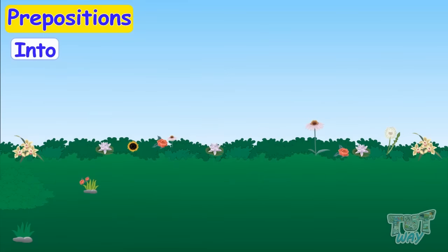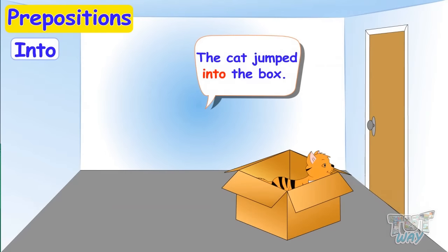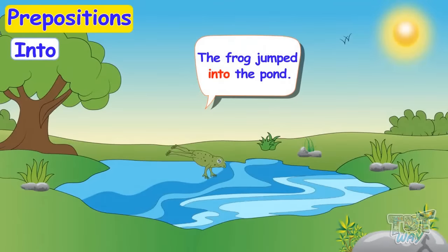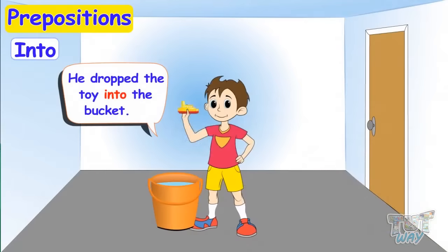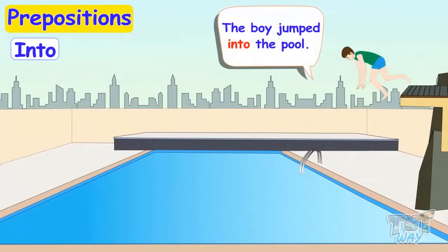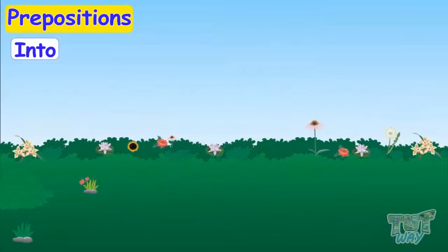Into. This is our next preposition. The cat jumped into the box. The frog jumped into the pond. He dropped his toy in the bucket. The boy jumped into the pool. So we are clear when to use 'into'.